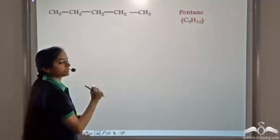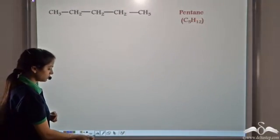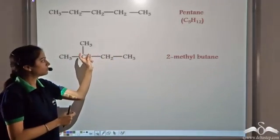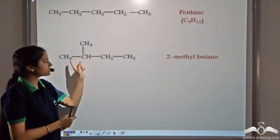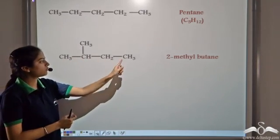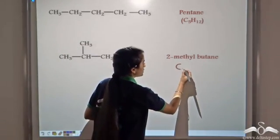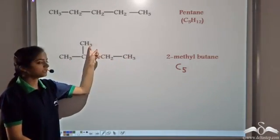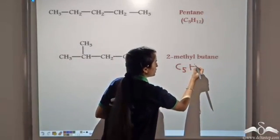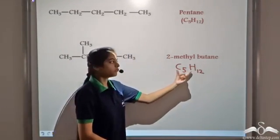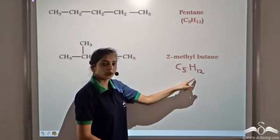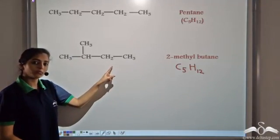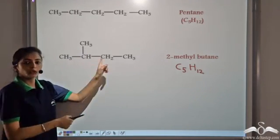If we move one carbon atom — we bring it down — we have moved one methyl group and placed it on the second carbon atom. Counting the atoms, we still have 5 carbon atoms and 12 hydrogen atoms, so the molecular formula remains the same, that is C5H12. But in the first case we had pentane, and the IUPAC name of this new compound is 2-methylbutane.